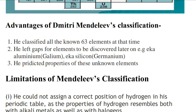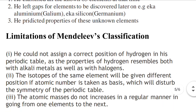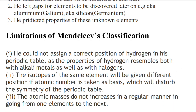Limitations of Mendeleev's classification: First, he could not assign the correct position to Hydrogen, because Hydrogen's properties resemble both Group 1 alkali metals and Group 17 halogens, making it impossible to fix its position accurately.